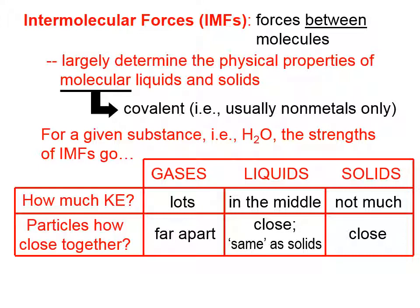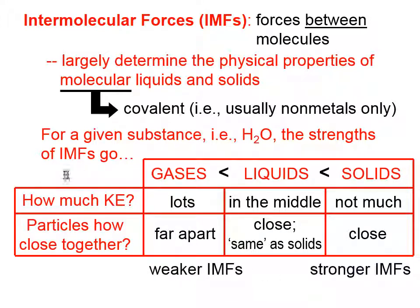As we know, anytime electrostatic forces are involved, close together means a stronger interaction. Solids tend to have the strongest intermolecular forces and gases the weakest for a given substance. Kinetic energy depends on the temperature of the matter and the proximity of those particles — and for gases in particular, how much pressure they're under to force those gaseous particles closer together than they otherwise would be.